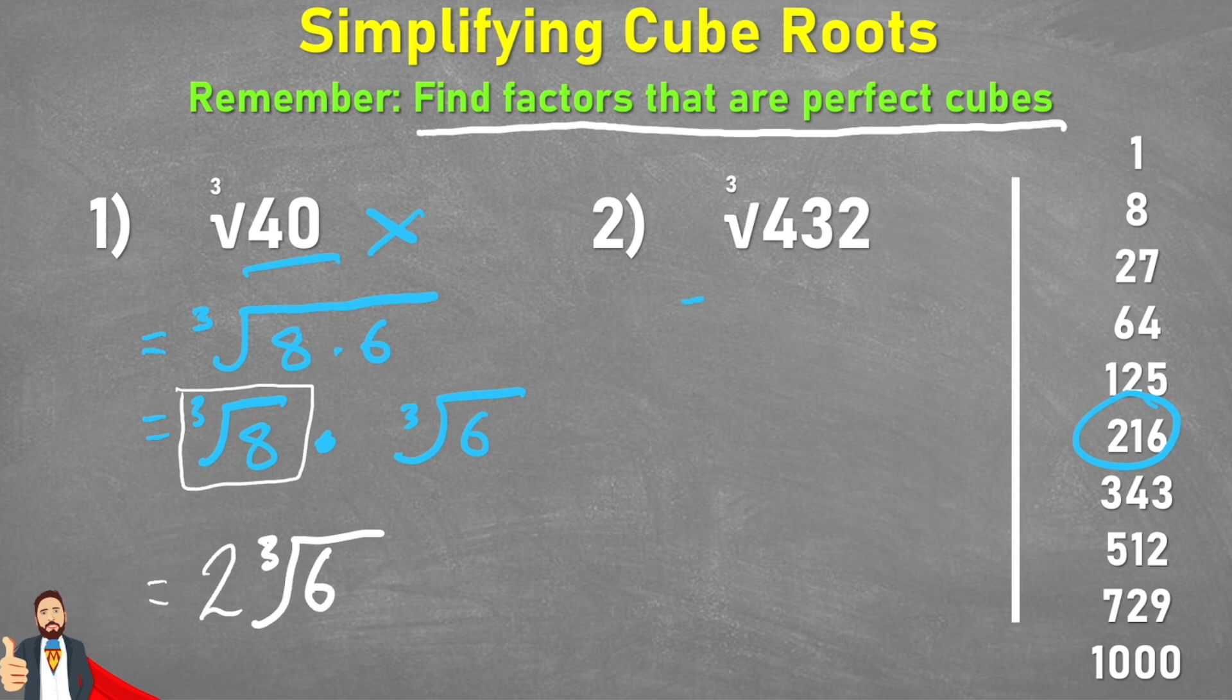So same principle, I can say that this cube root of 432 is equivalent to the cube root of 216 times 2. And again, thanks to that multiplication and product property law, I can say that it's equivalent to the cube root of 216 multiplied by the cube root of 2.